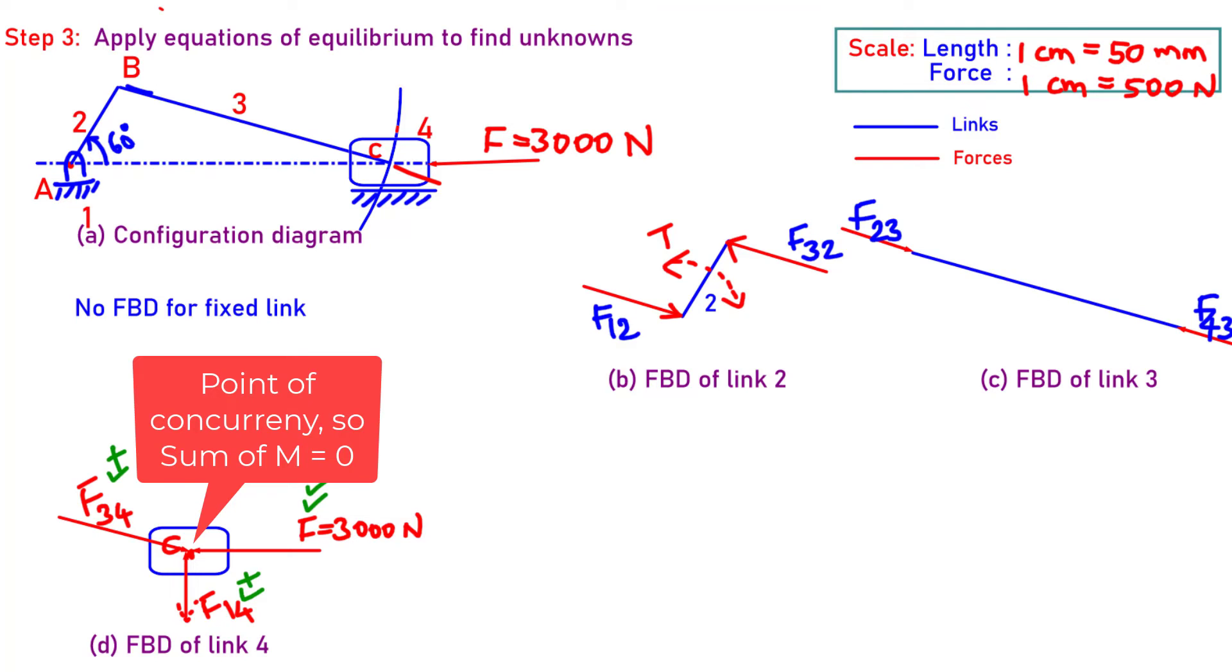Here by applying the summation of F is equal to zero, when we have three forces acting on it, when we draw a force polygon, the force polygon must be a closed force polygon. Then we can say the three force member is in equilibrium. That means these three forces must form a closed polygon. That is the clue.